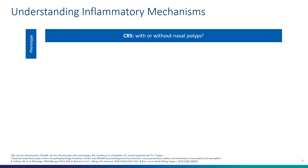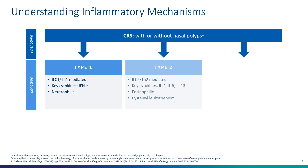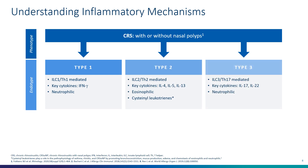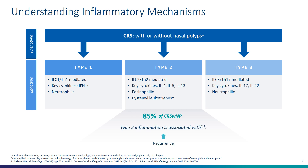Chronic rhinosinusitis with and without nasal polyps can be manifested by at least three types of inflammation: type 1, type 2, and type 3. In type 1, interferon gamma plays a critical role in neutrophilia. Type 2 is the classic inflammatory signal manifested by IL-4, IL-5, and IL-13 with eosinophils and cysteinyl leukotrienes. Type 3 is the TH17-mediated IL-17, IL-22 neutrophilic inflammatory response. About 85% of patients with chronic rhinosinusitis with nasal polyps fit into the type 2 inflammatory response, with polyp recurrence, enhanced asthma risk, and increased disease severity.